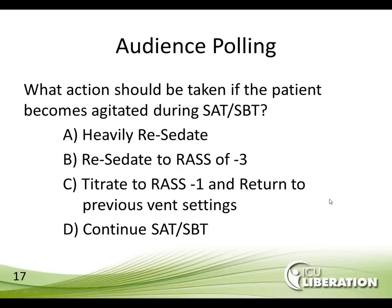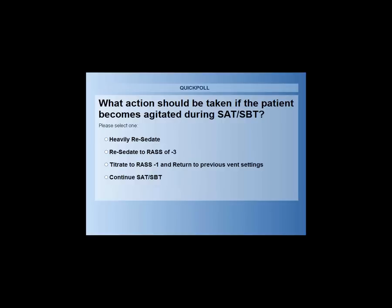So we go to an audience polling question: What action should we take if a patient becomes agitated during an SAT or an SBT? Possible answers are: heavily resedate the patient; resedate to a RASS of minus 3; titrate to a RASS of minus 1 and return to the previous ventilator settings; or continue the SAT/SBT. I'll give you a few moments to vote.